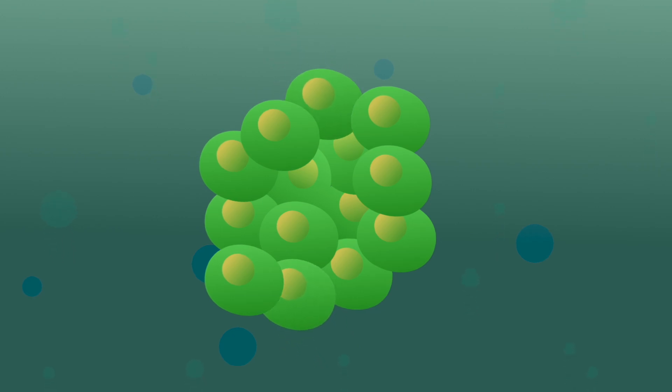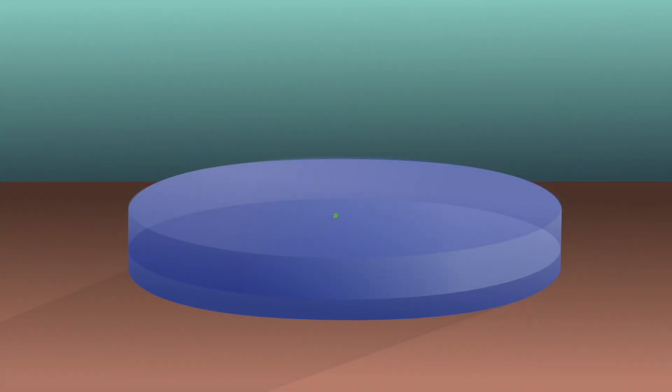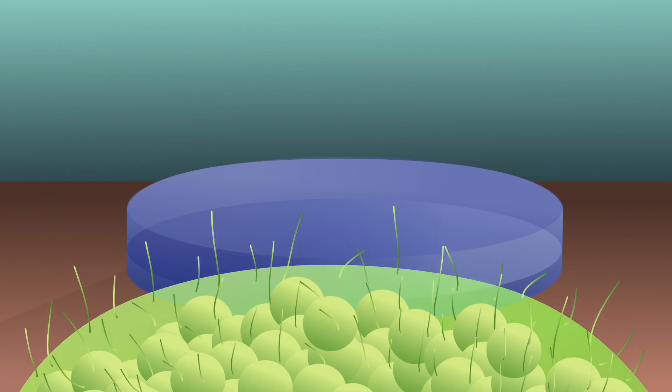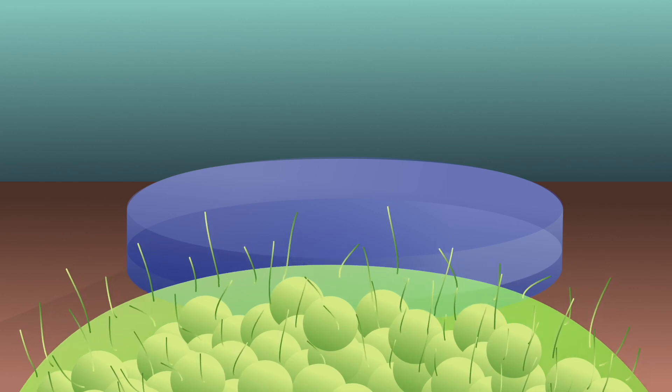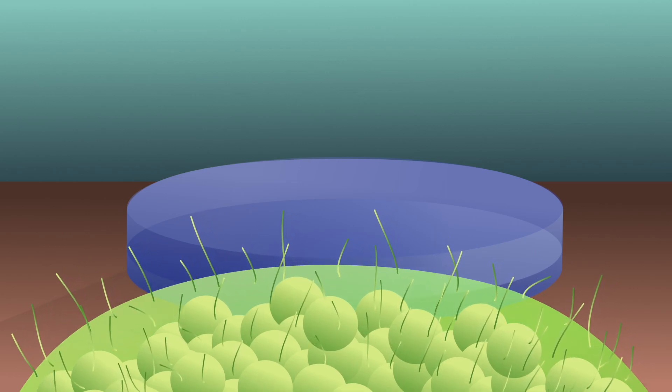These cell clusters started growing, and eventually even moving. The motion was caused by the development of cilia, small hair-like extensions, which would ordinarily spread mucus around the frog's skin. In the petri dish though, these cilia acted like little paddles, allowing the xenobots to move around.